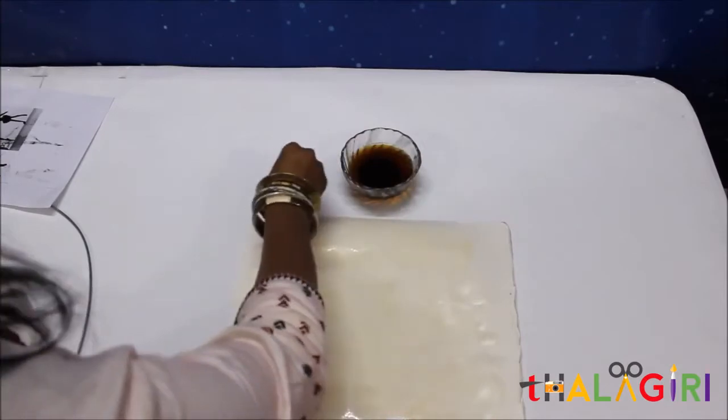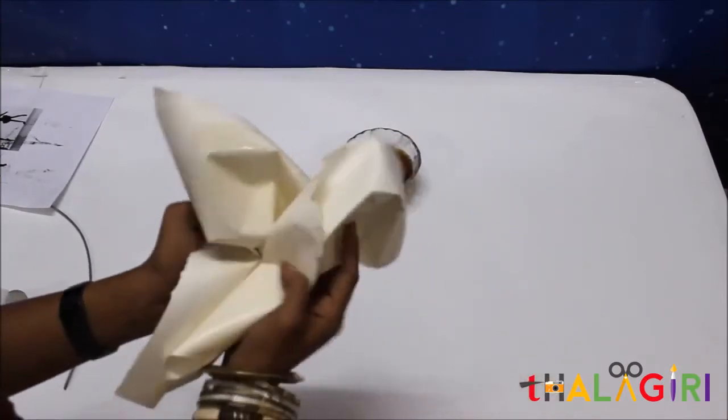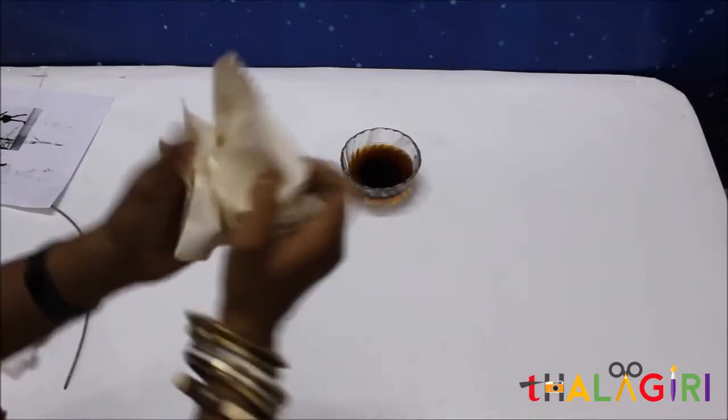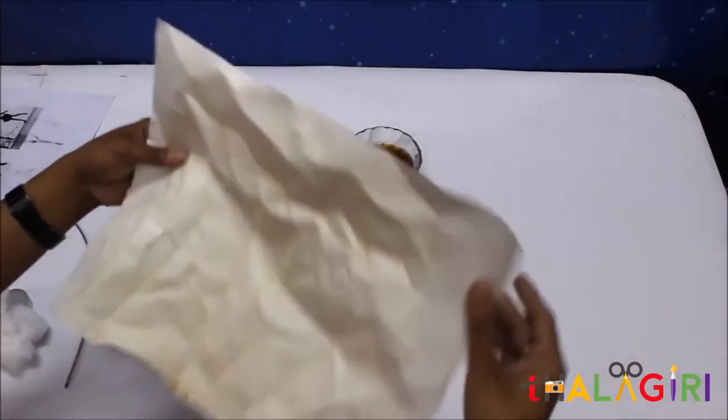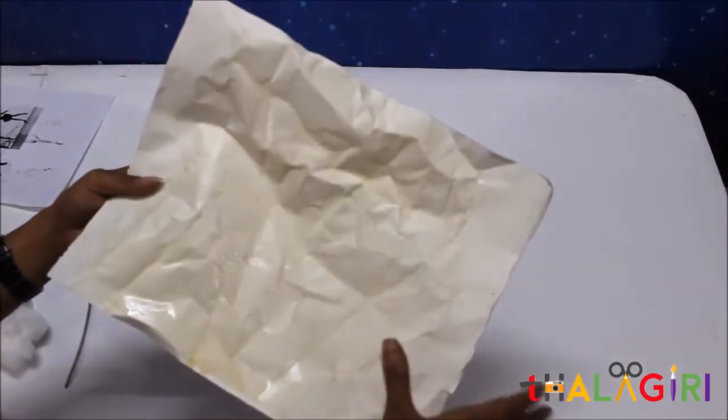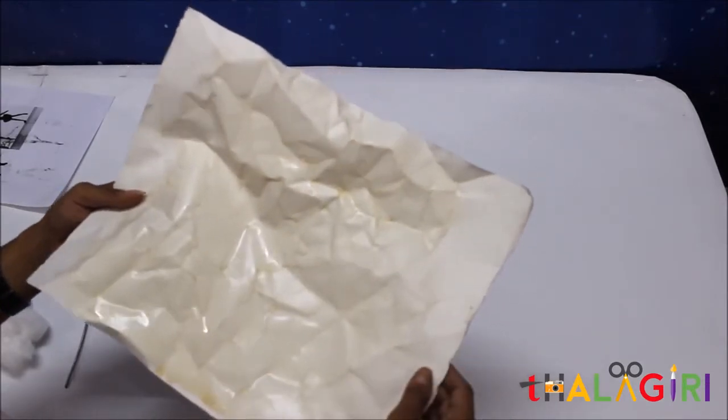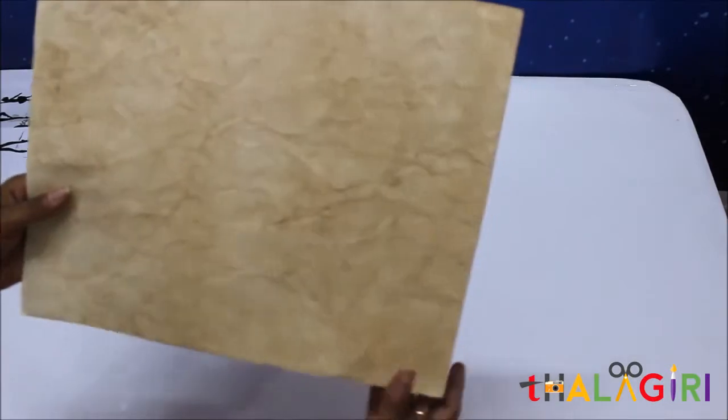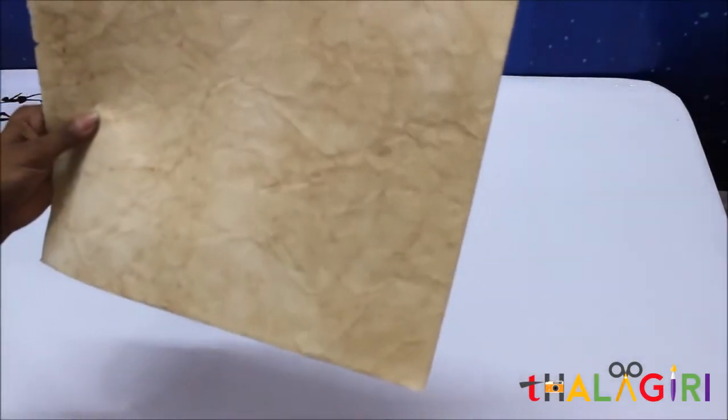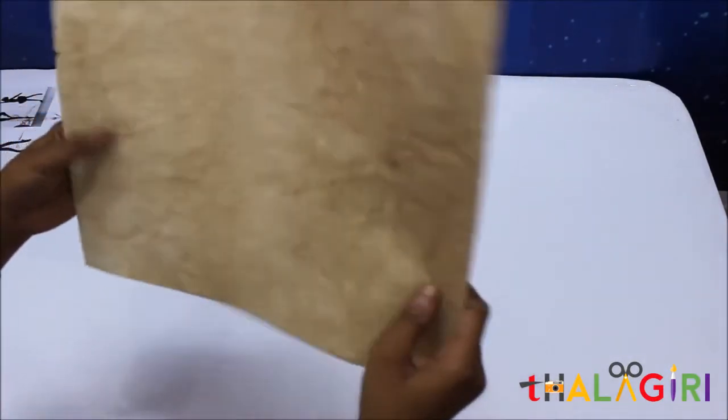When you are complete with this, just fold it and give some wrinkles on the sheet like this. And just put this thing in the sunlight so it gets completely dry. When your sheet is completely dry, it is going to look like this. It is going to give a very old book paper kind of look.